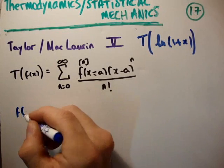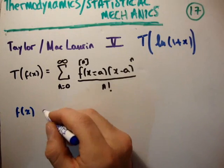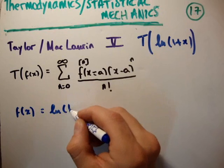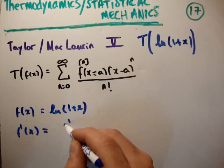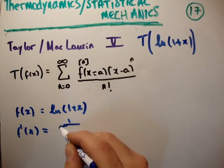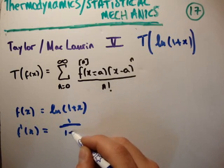So let's take the 0th derivative of f(x), well that's just going to be equal to the natural logarithm of 1 plus x. If we take the first derivative of our function, we're going to get 1 over (1 plus x).